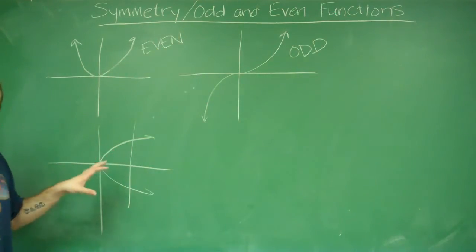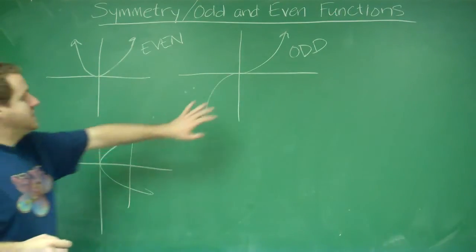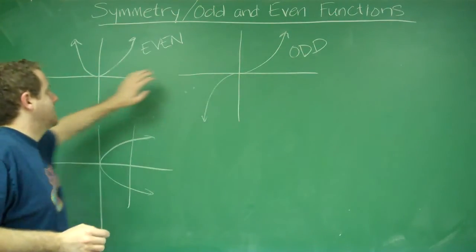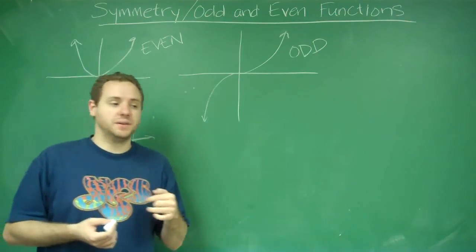Like I said here, if you have symmetry about the x-axis, that's actually not a function. So this is an example of an odd function. This is an example of an even function. So let's think about what those mean algebraically instead of graphically.